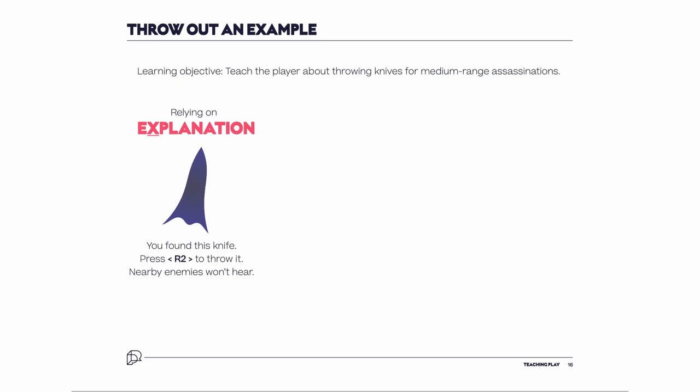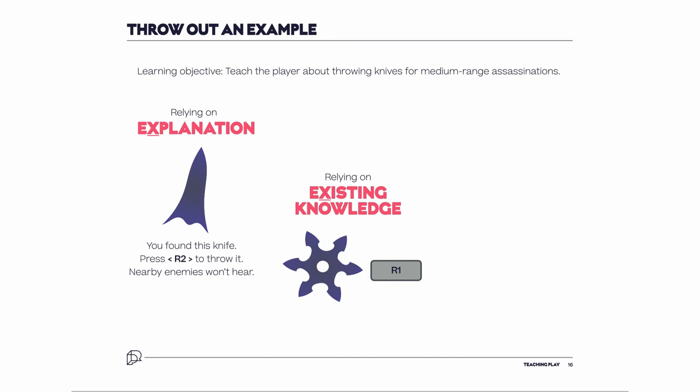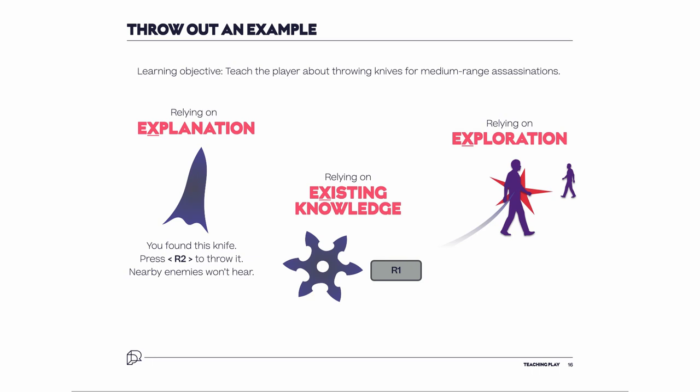If we lean into explanation, we might show the player a picture of the knife and have a prompt pop up saying: 'You found this knife — press R2 to throw it.' If we lean into existing knowledge instead, we might change the shape of the throwing knife to one players know from popular culture, and map the button to the throw or assassinate or grenade button used in similar games. And if we leaned into exploration, we might build a scenario where the player unlocks or crafts a throwing knife and is given some opportunity through the game scenario to use trial and error to determine the alert range, rather than expressly telling the player or expecting them to understand it intuitively.